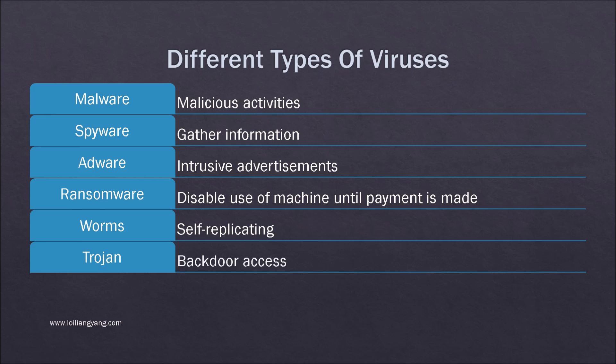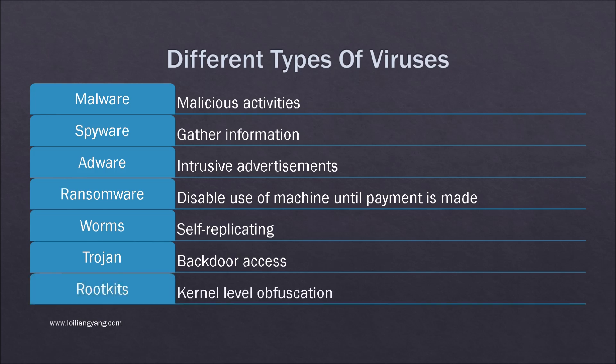A trojan is a virus that allows a computer hacker to maintain access continuously into the system after the initial attack. Because most intrusions require an exploit of a vulnerability, once a vulnerability is patched, the hacker will lose access to the system. Therefore, a trojan helps maintain that access by installing a virus into the system that allows a hacker to always log into the system successfully without traditional intrusion.